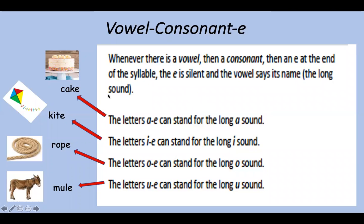So let's take a look. The letters A, then consonant E, can stand for the long A sound like in cake. Hear that A? The letters I, consonant E, can stand for the long I sound like in kite. Hear that I? The letters O, consonant E, can stand for the long O sound like in rope. Hear the O? And the letters U, consonant E, can stand for the long U sound like in mule. Hear that U?